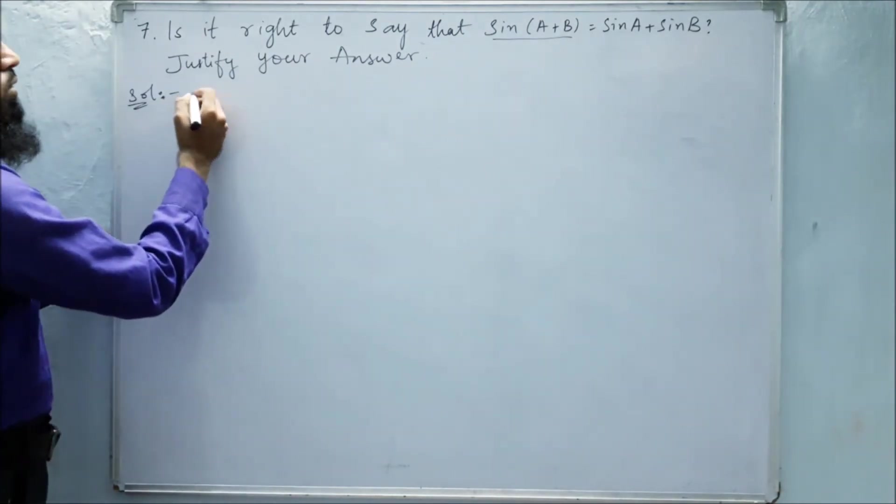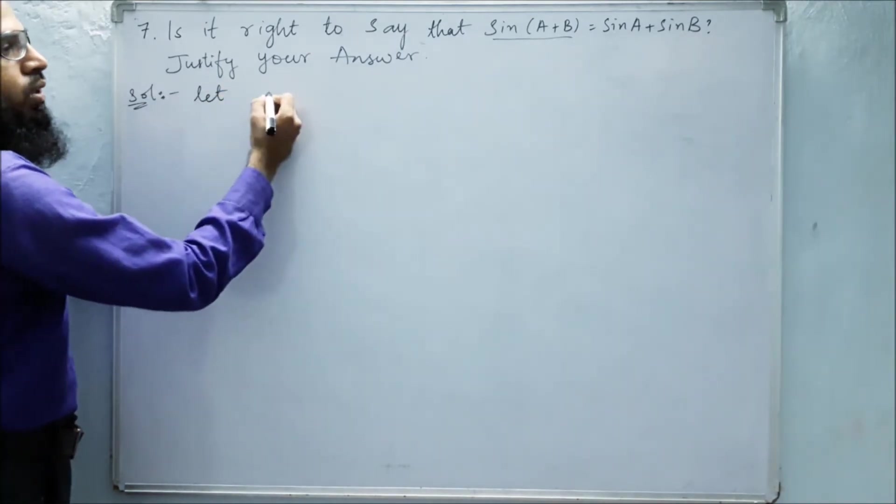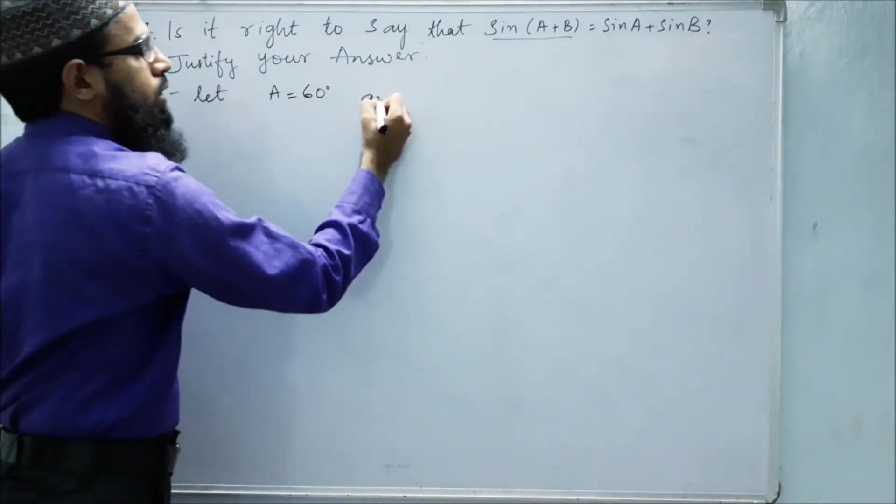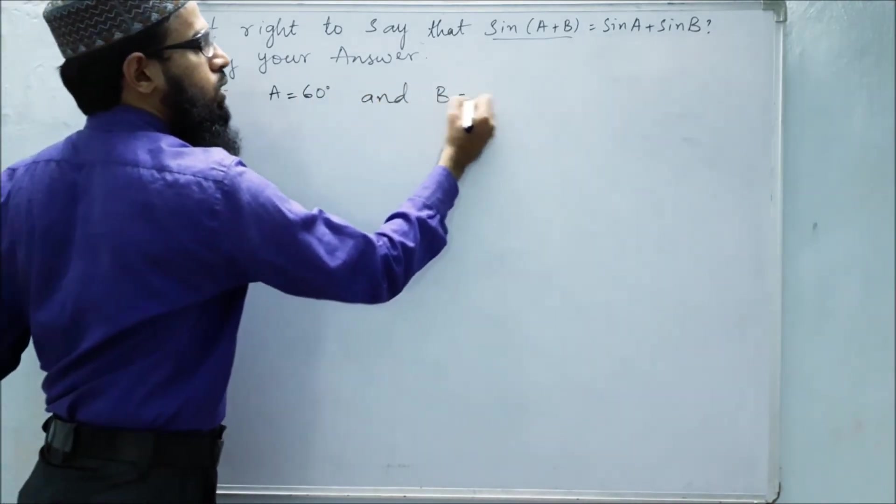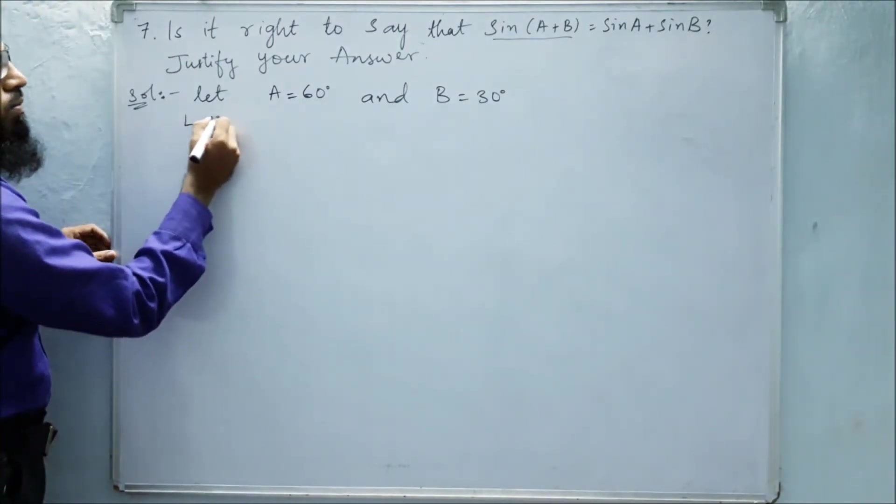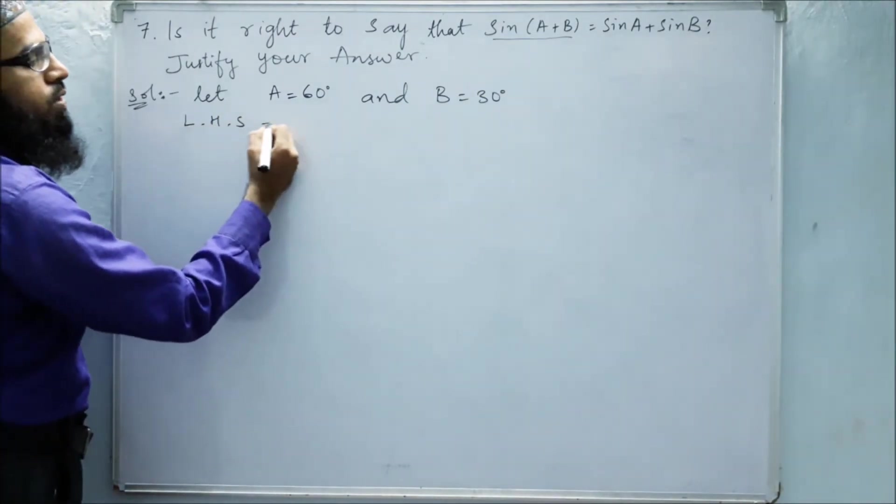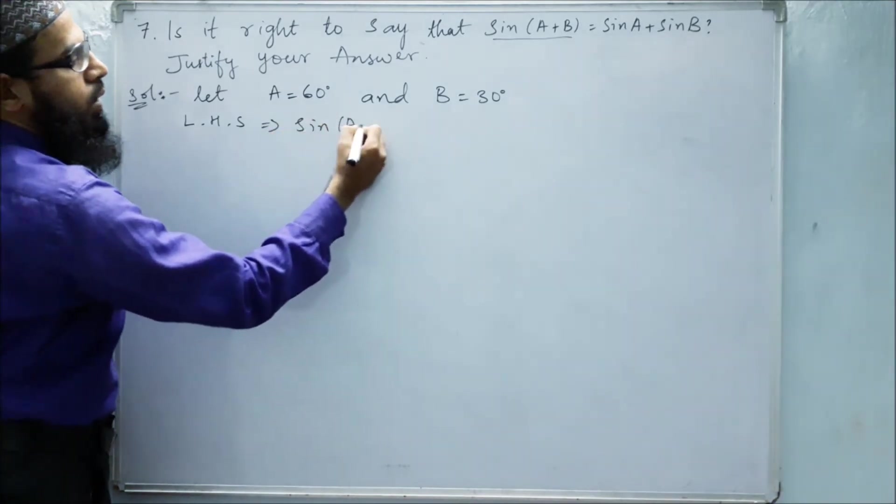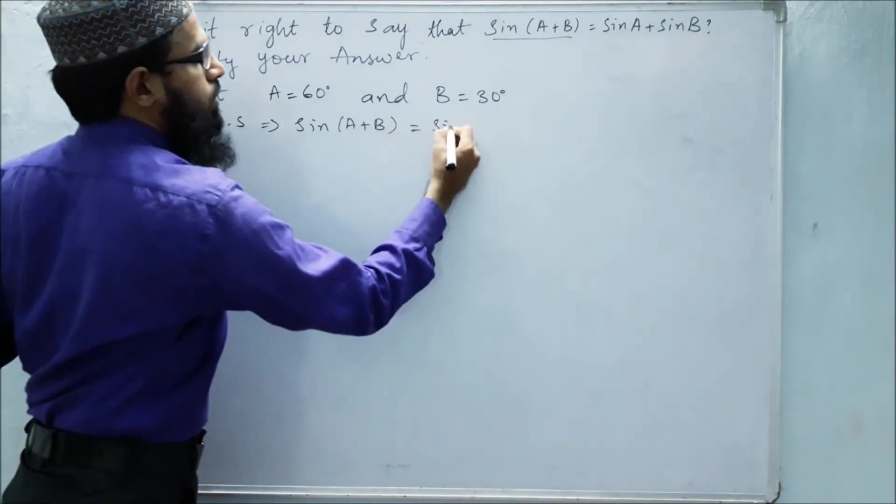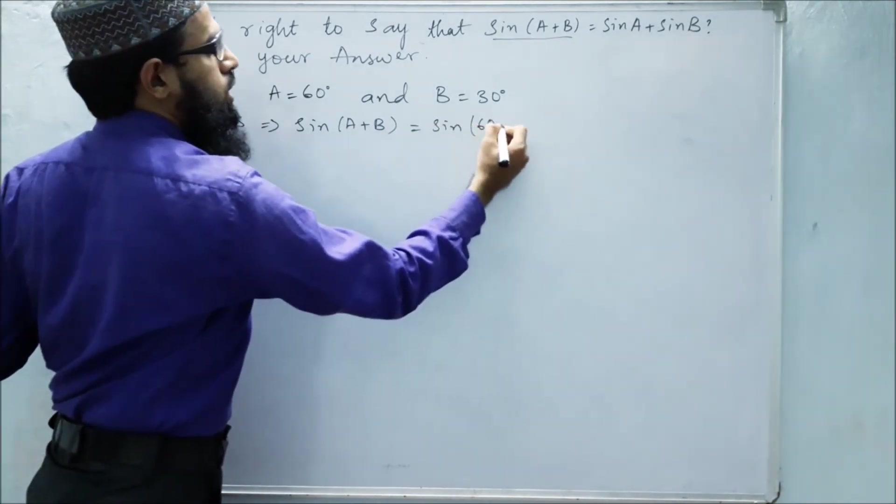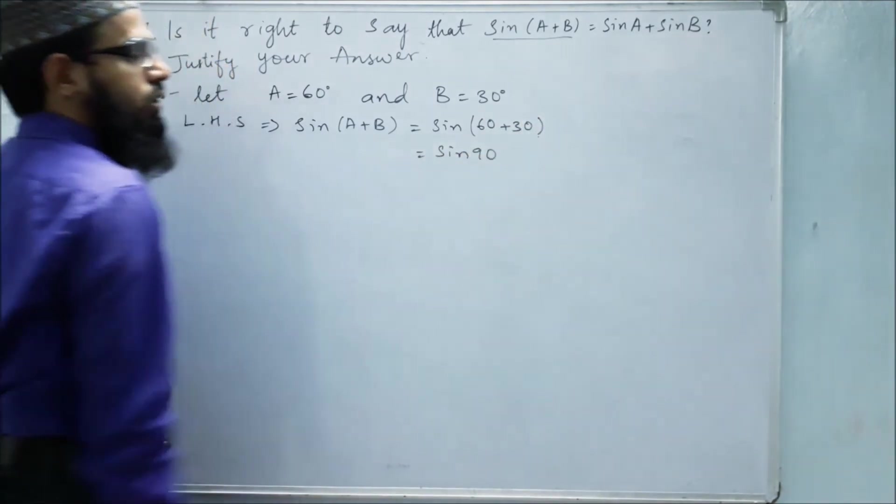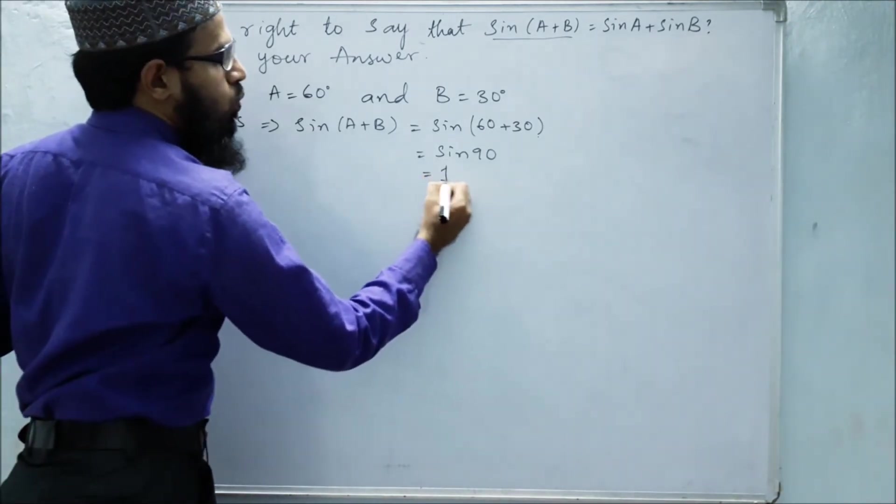For finding that, we have to take a value. Let A be 60 degrees and B equals 30 degrees. Now take LHS. What is LHS? Sin(A+B). So we get sin(60 degrees plus 30 degrees). That is sin 90. Sin 90 value is 1.